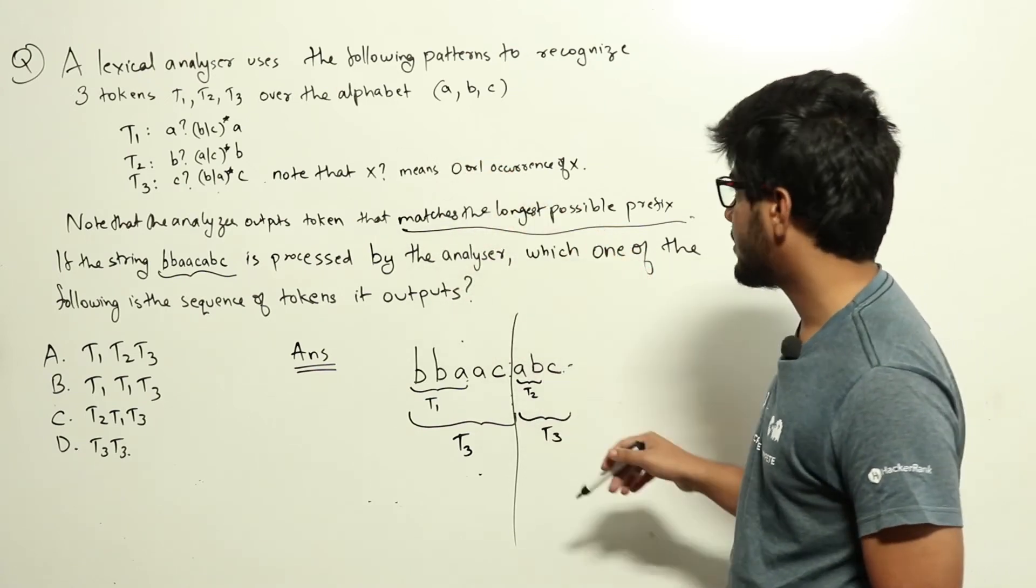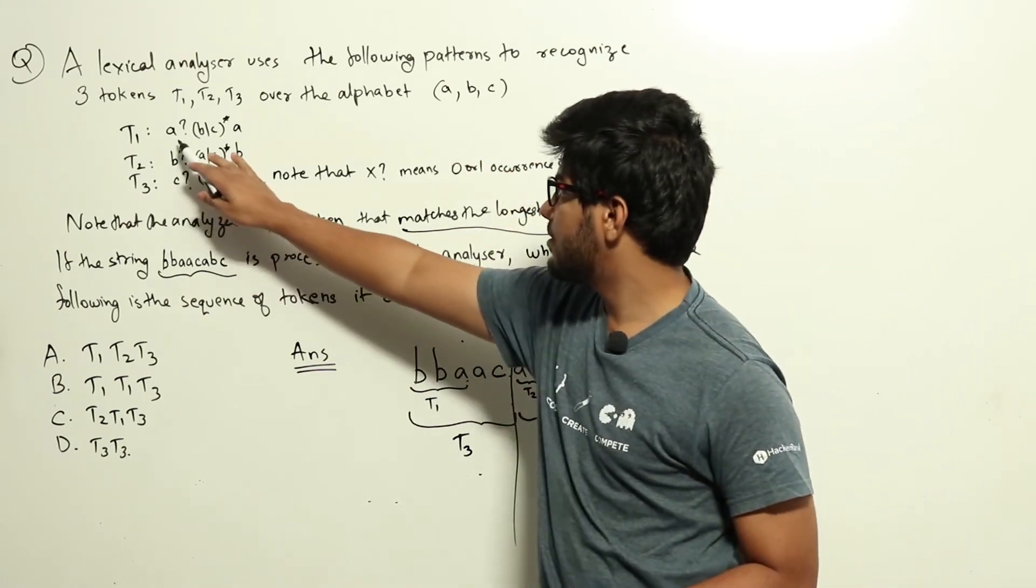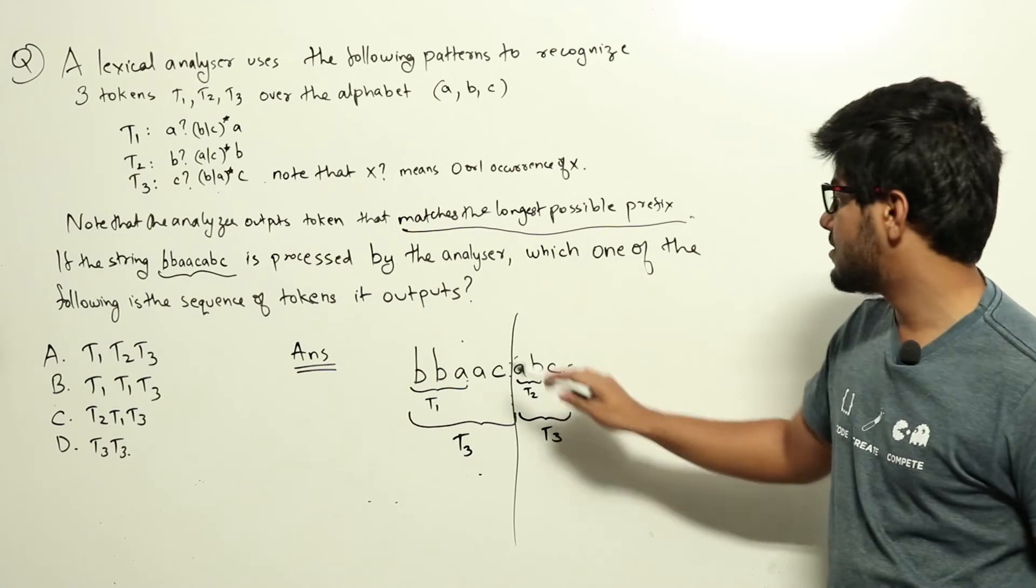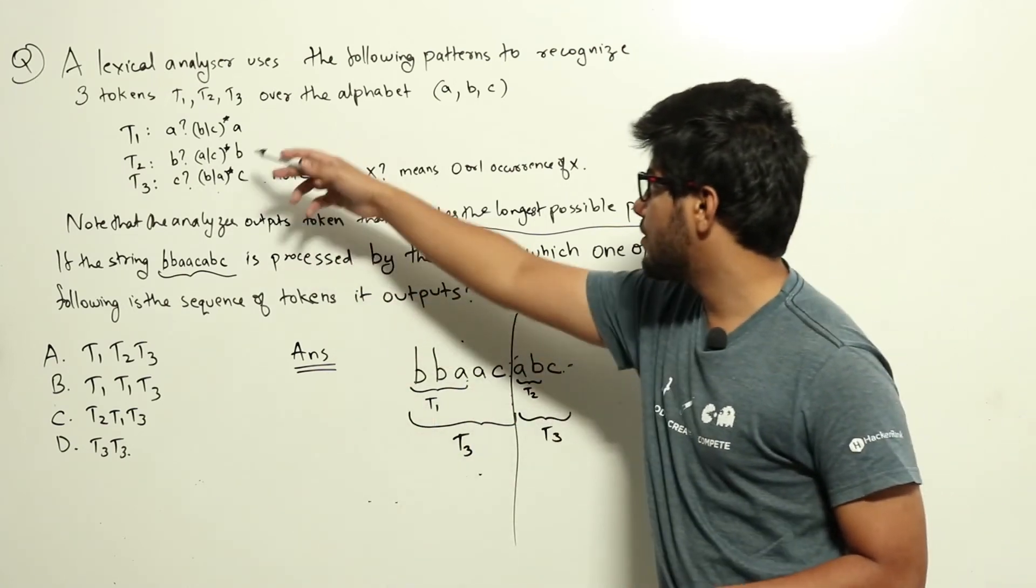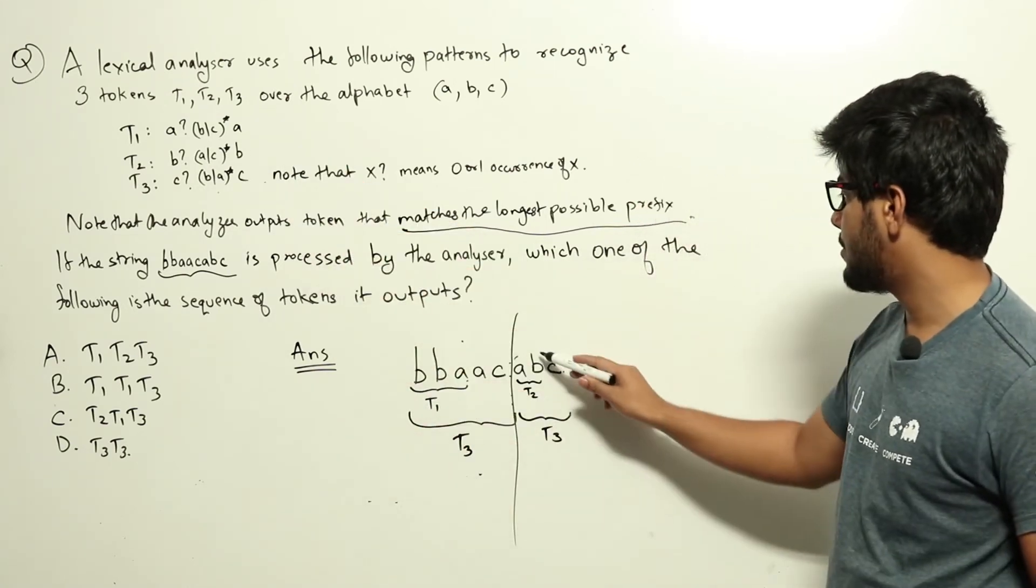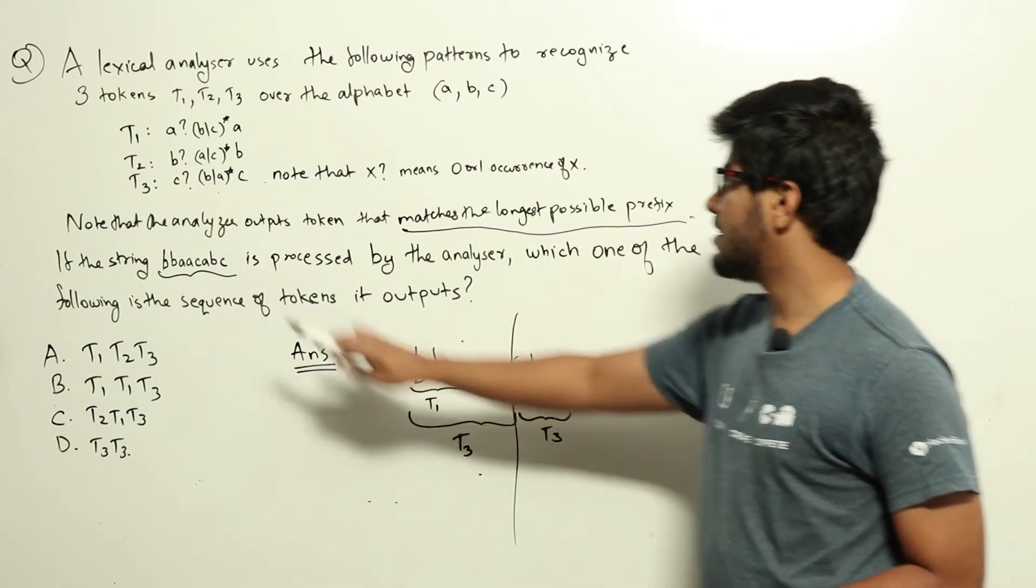This again we will go through these one by one. For T1, if we try, we can take one occurrence of a since it starts with a, then it is b or c, we can take one b and one c, and then it will end with a. But we don't have any more a here, so T1 can't be matched to this.